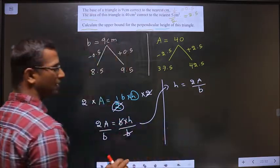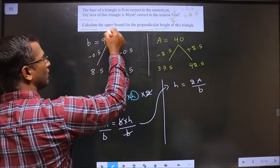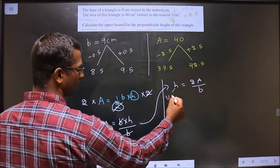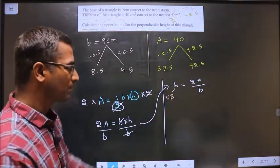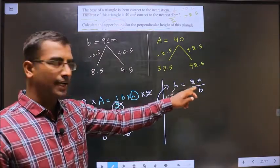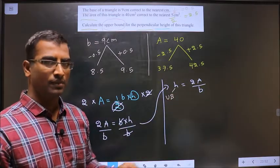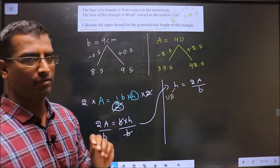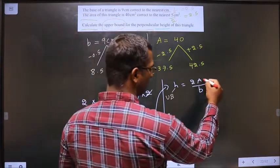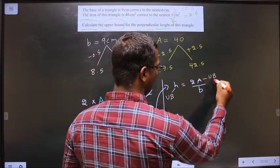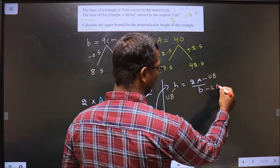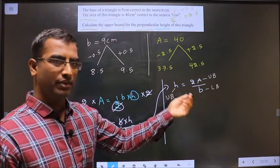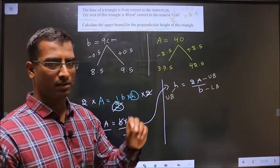Clear so far. Now I need upper bound for the height. And on the other side, it is a fraction. Fraction will result in upper bound only if, for the numerator, you take upper bound, and for the denominator, you take lower bound. In fraction, upper by lower will result in upper.